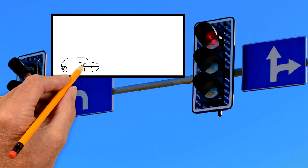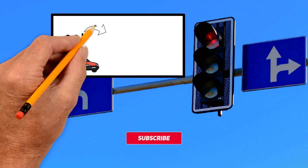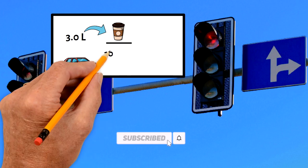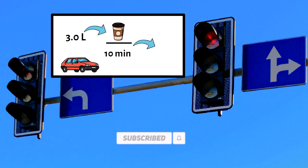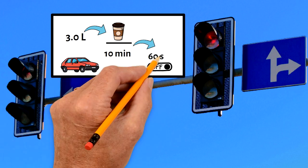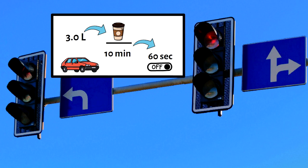Turn Off Motor. On average, a 3-liter engine burns the equivalent of one coffee cup fuel for every 10 minutes idle. Therefore, turn off the engine when you expect to stand for 60 seconds and more.